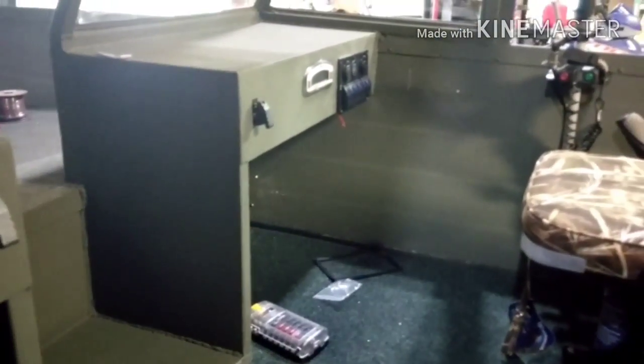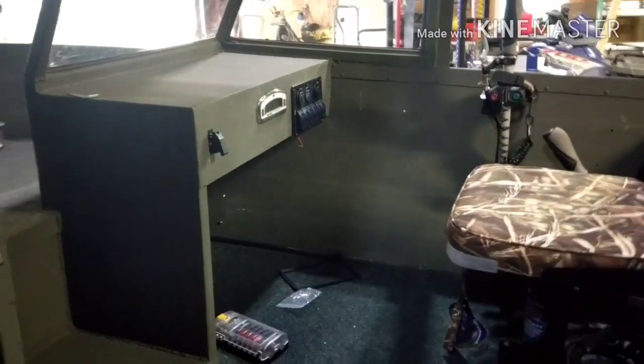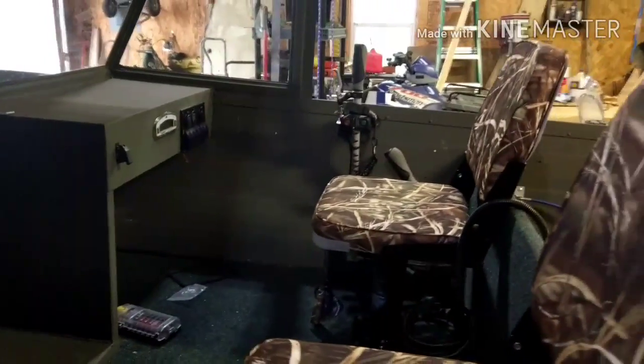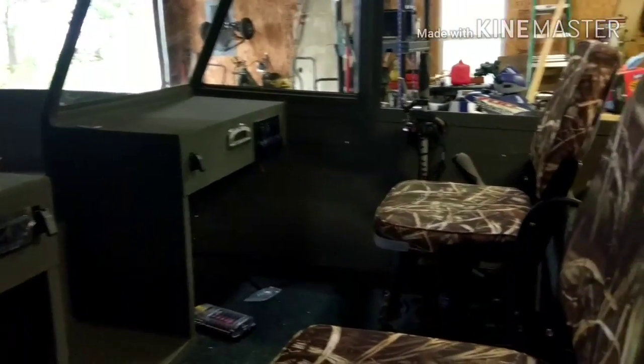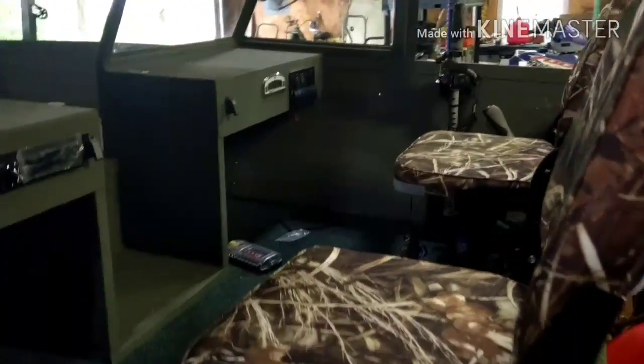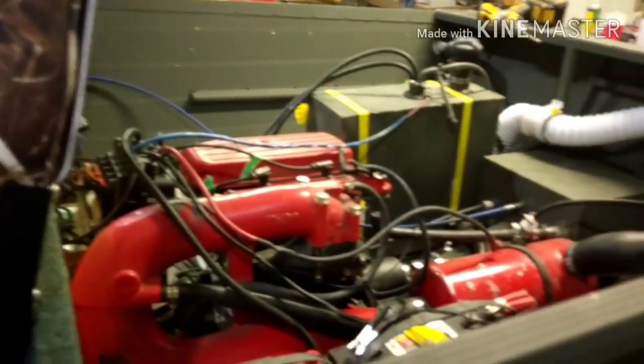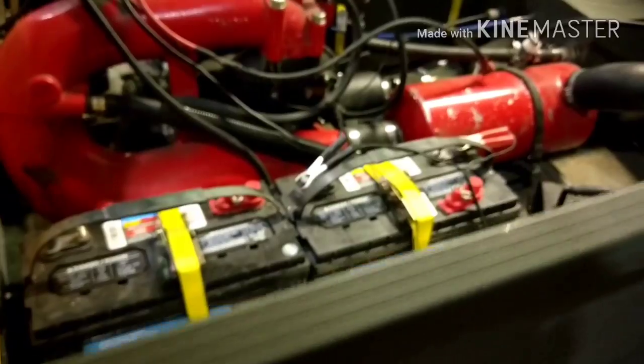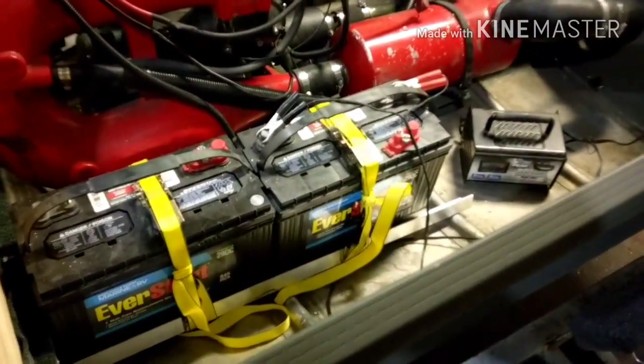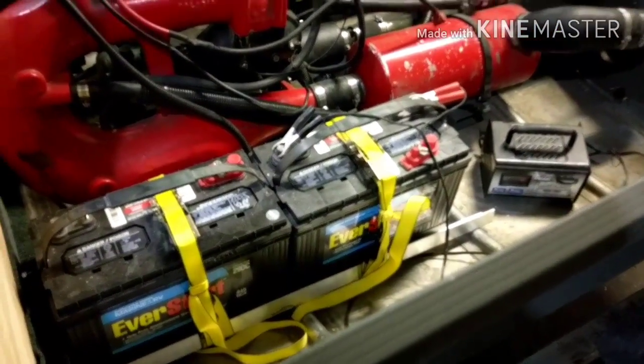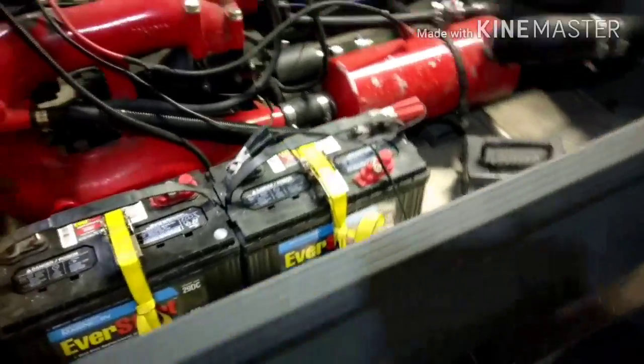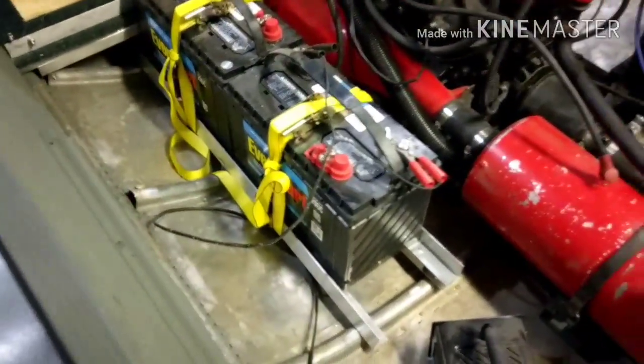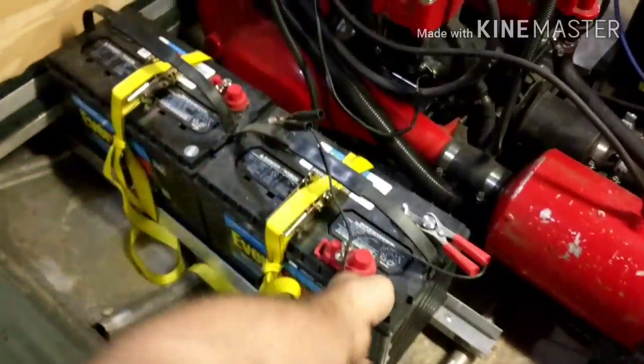That other switch right there is going to be the master switch to run the switch panel. We'll hop up in there in a second or go over it when it's on that side. Back here to the engine compartment, we've got both batteries installed. I made a tray to hold them, and then they are secured with a ratchet strap. These things are solid.